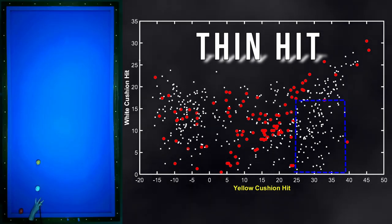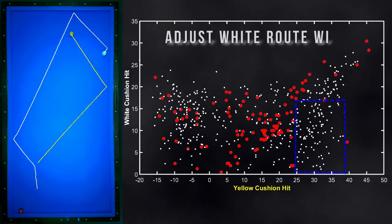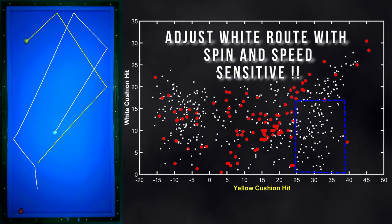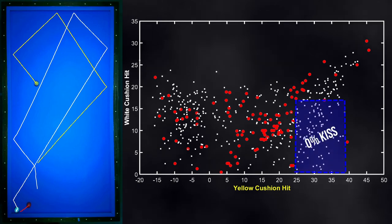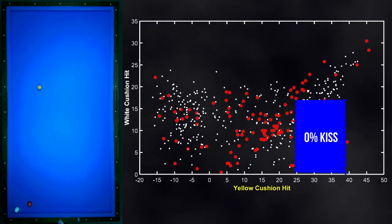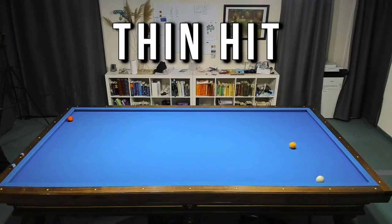On the one hand this is very good, but with the thin hit we incur very high sensitivity to vertical spin and impact speed. This will make it more difficult to make the point with the red ball.